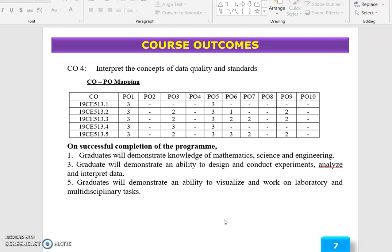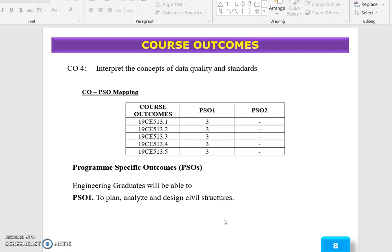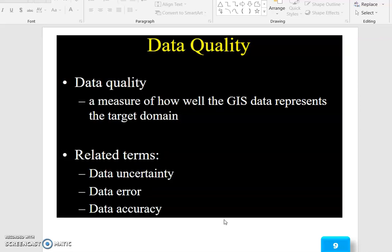The course outcome correlation with program outcomes is PO1, PO3, PO5, and program specific outcome 1. The outcome of this topic is to interpret the concept of data quality under standards.